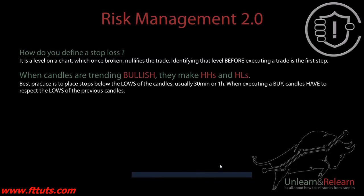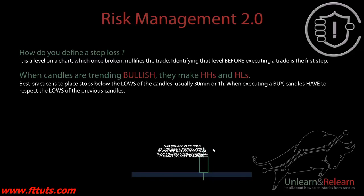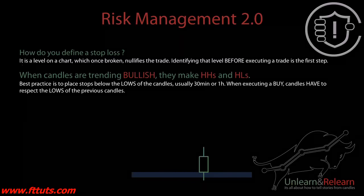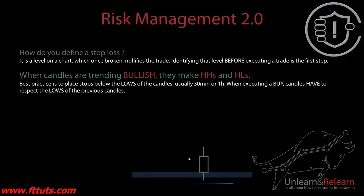For example, let's say you have a support at the bottom and a candle closing bullish at support, followed by the next candle also closing bullish at support. On the one-hour timeframe, this signals a high probability for the next candles to move bullish. You might want to place your stop below that bullish candle, because the next candle then has to make a higher high and a higher low to continue moving bullish.